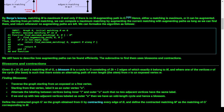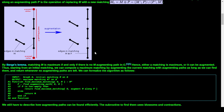By Berge's lemma, a maximum matching M is maximal if there are no M-augmenting paths in G. So if you can't find any path that can be augmented, you've maximized the matching. Starting from an initial matching, we compute a maximal matching by augmenting the current matching with augmenting paths as long as we can find them, then returning whenever no augmenting paths are left.